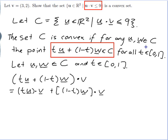And I can bring out constants out the front of my dot product as well. So this comes out to t(u·v) and this comes out to (1-t)(w·v).